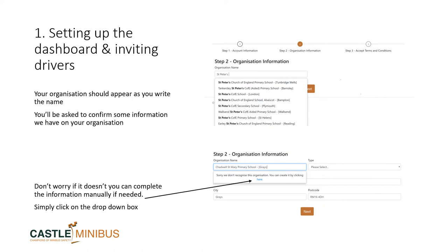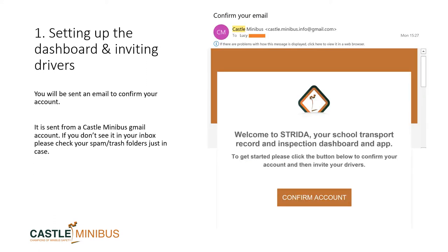You next need to add the information for your school or organisation. If you are a school, your information should drop down as you type it. If you don't see your organisation's information there, then you can add it yourself. Once you have completed the registration process, you will be sent an email to confirm your account. This email is sent from a Castle Minibus Gmail account, so if you don't immediately see it in your inbox, please check your spam or trash folders.